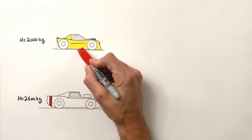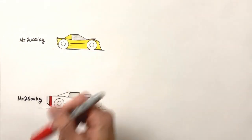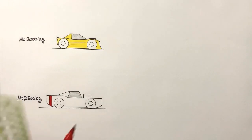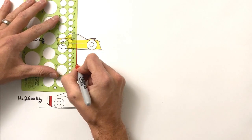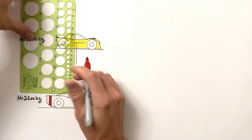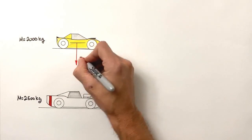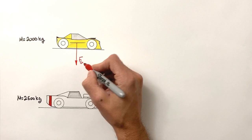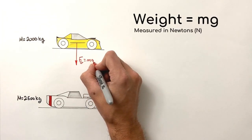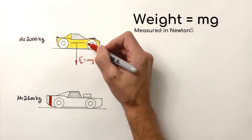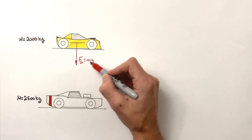We'll start with this car right here. We want to show all the different forces acting on this car. In this case, there are three forces acting on the car. The first force, and sometimes the most obvious, is gravity. Gravity is always acting on everything, so there's this force downward by gravity. We refer to the force downward by gravity as weight.